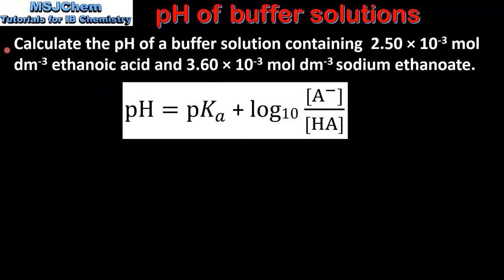Next we look at an example. Calculate the pH of a buffer solution containing 2.5 × 10⁻³ mol dm⁻³ sodium ethanoate. Here we have the Henderson-Hasselbalch equation, which can be found in section 1 of the data booklet.